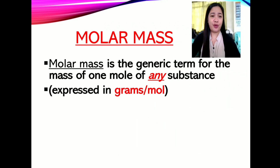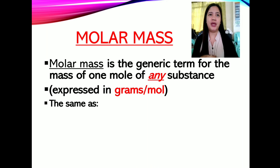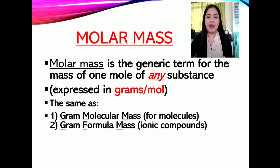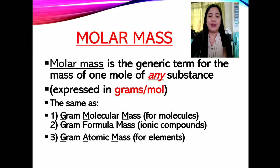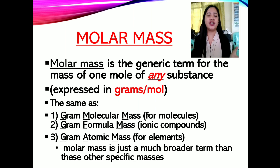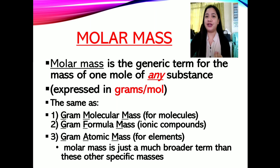Therefore, molar mass is the generic term for the mass of one mole of any substance, and it is expressed in grams per mole. It is the same as gram molecular mass for molecules, gram formula mass for ionic compounds, and gram atomic mass for elements. Molar mass is just a much broader term than these other specific masses. For our lesson, we will be using the unit grams per mole.